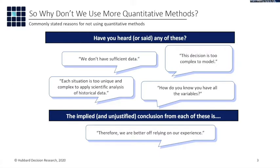Think about this: have you heard any of these objections, or maybe said them yourself? 'We'd like to measure that, but we don't have sufficient data.' If it sounds familiar, I would challenge you to think of that as a very specific mathematical claim. When someone says we don't have sufficient data to measure that, does that mean they actually computed the uncertainty reduction they would get from a given amount of data, and computed the economic value of that uncertainty reduction to determine whether or not the effort was justified?